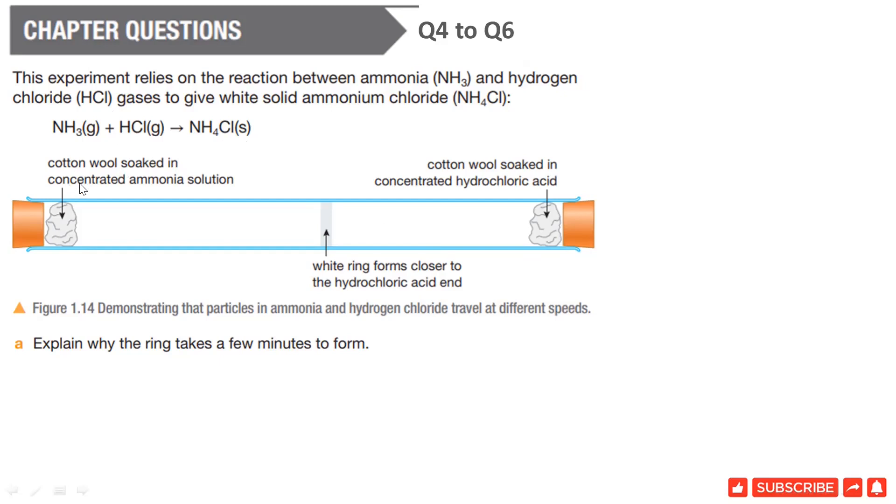Cotton wool soaked in concentrated ammonia solution. This wool has ammonia solution, the other wool has HCl solution. When they get fumes coming out from the soaked cotton, they get together and a ring is formed. White ring forms closer to the hydrochloric acid end. The question is, explain why the ring takes a few minutes to form.